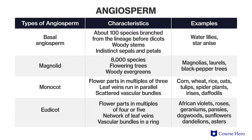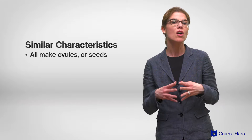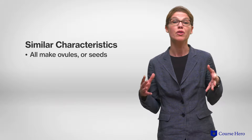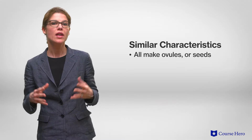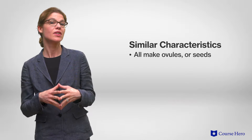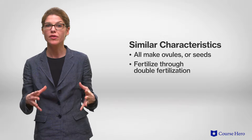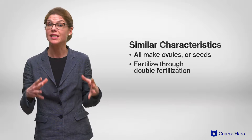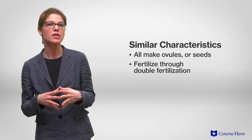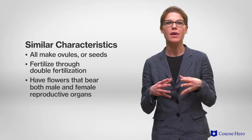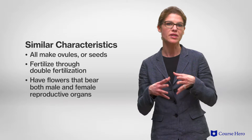Despite the vast diversity of angiosperms, members of this phylum all share the following characteristics. They all make ovules, or seeds, that are encased and protected by the carpel, or fruit. They all carry out a unique type of fertilization, known as double fertilization, in which one fertilization event produces a zygote and the other produces a triploid cell. And finally, they have flowers that bear both male and female reproductive organs.